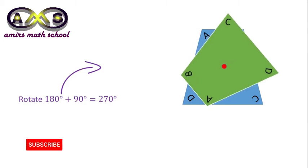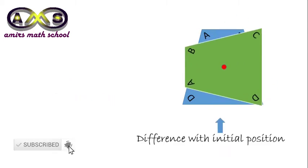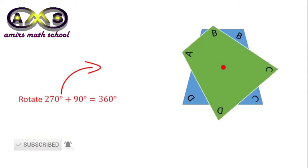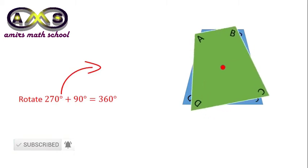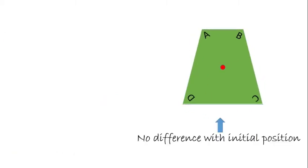After 270 degree rotation, the result is the same — it differs with the initial position. And after 360 degree rotation, it becomes identical with the initial position.